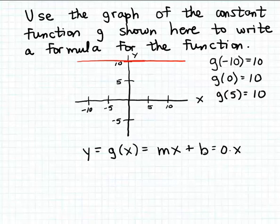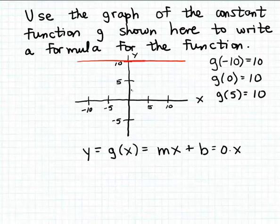The constant in our linear function formula is the same as the y-intercept. We can see in this example that the y-intercept is going to be ten. Remember, the y-intercept is the output that matches an input of zero, and we already evaluated g of zero — the matching output was ten. So this function graph crosses the y-axis at ten, meaning our y-intercept is ten.